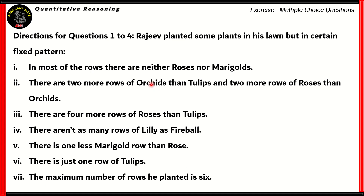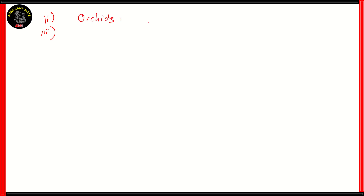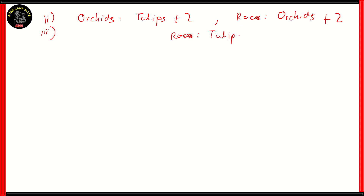How do we solve this question? Let's look at each of the clues. If you look at clue number two, it says there are two more rows of orchids than tulips and two more rows of roses than orchids, which is the same statement as number three, which says there are four more rows of roses than tulips. According to statements two and three, we have the number of rows of orchids as the number of tulips plus two, and the number of roses as the number of rows of orchids plus two. That means the number of roses would be the number of rows of tulips plus four.